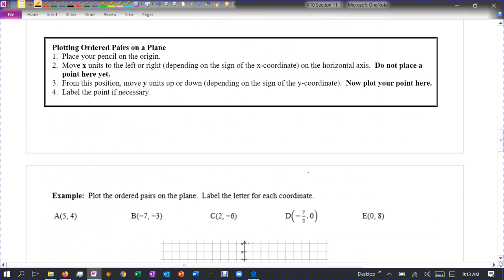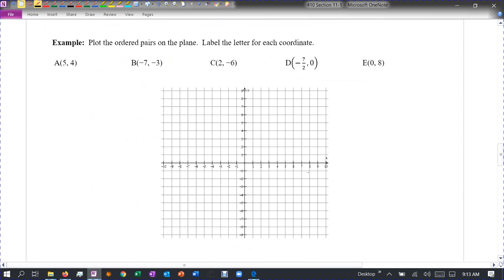And let's practice plotting some points. So let's plot the point A, which is going to be the point five, four. So five is the X, four is the Y. So we go to the right, one, two, three, four, five. Okay, and then from there we go up, one, two, three, four. And we draw a point there and we label it A.